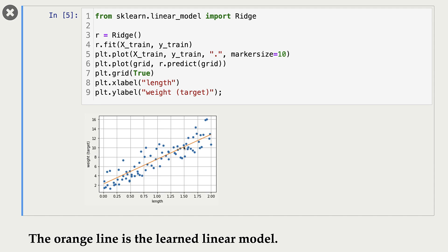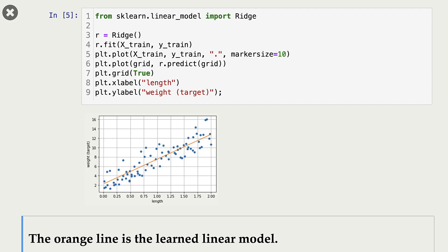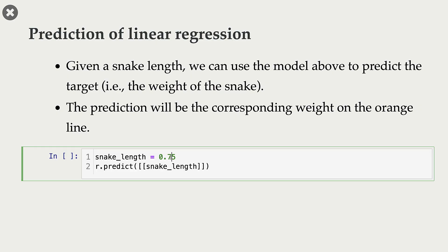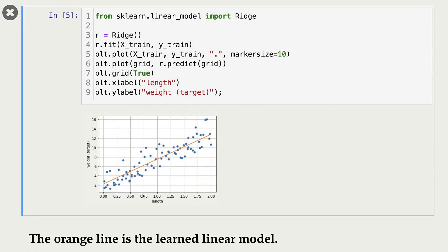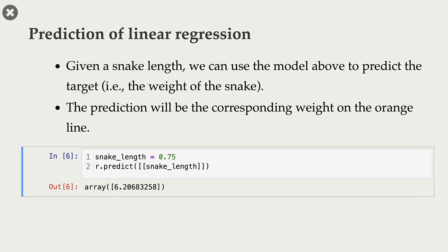In this case, it will be a little bit bigger than 10. So for this new snake with length 1.5, we are predicting that its weight is going to be a little bigger than 10. Similarly, trying snake length equal to 0.75, if you look at 0.75 on the orange line, the prediction is going to be a little bit bigger than 6. And that's what we get — the prediction here is 6.20.